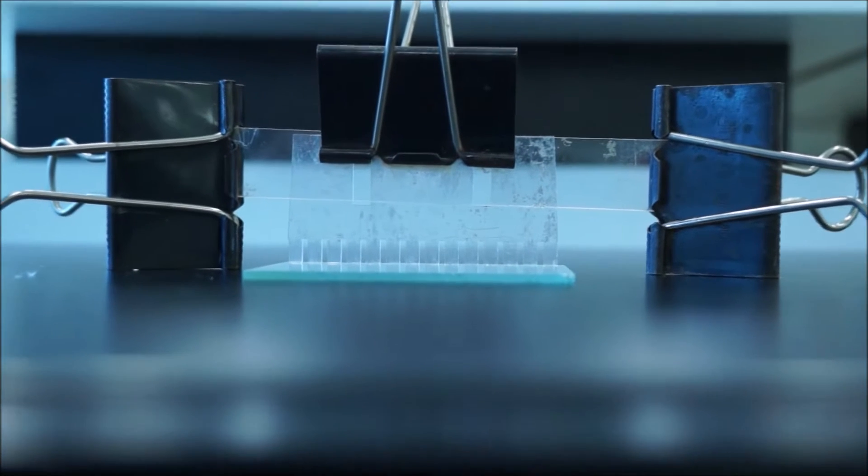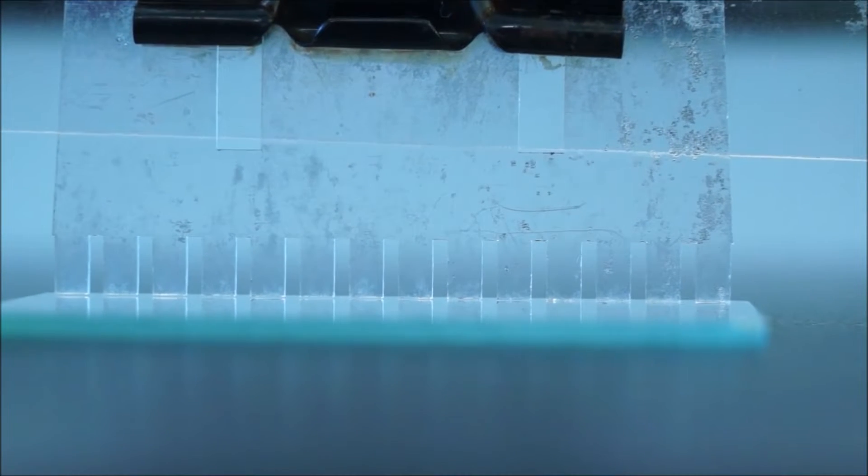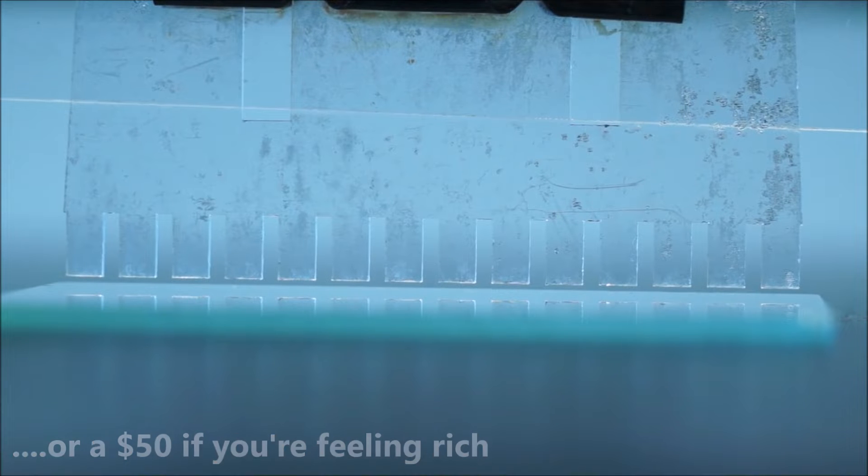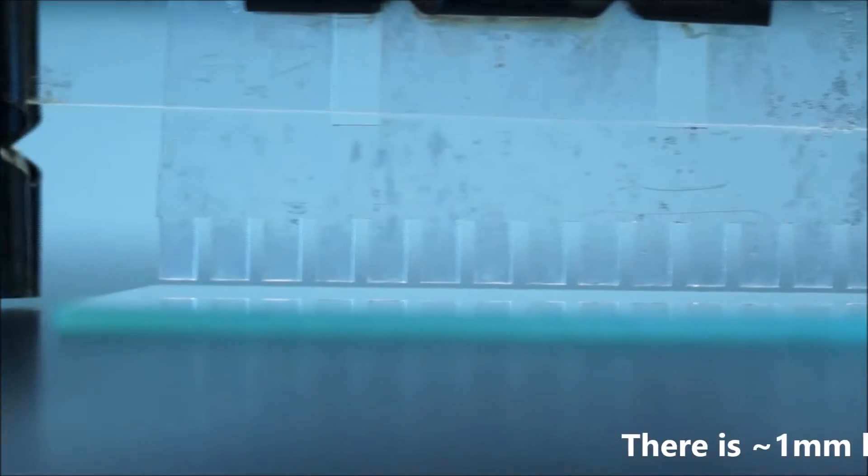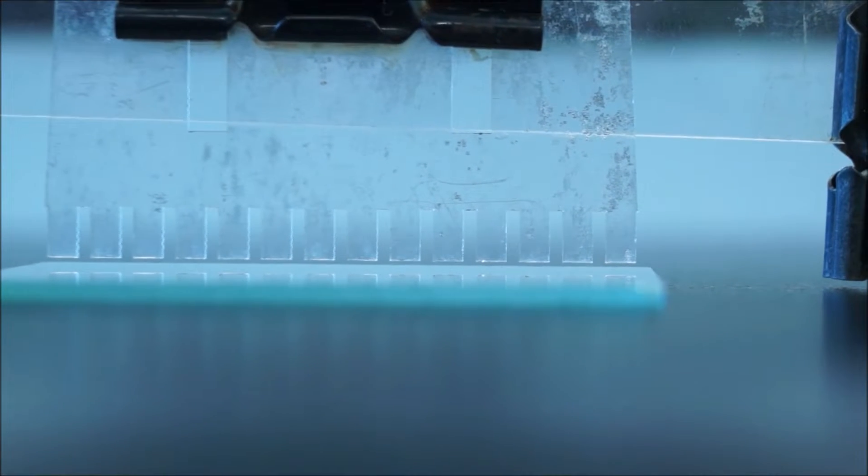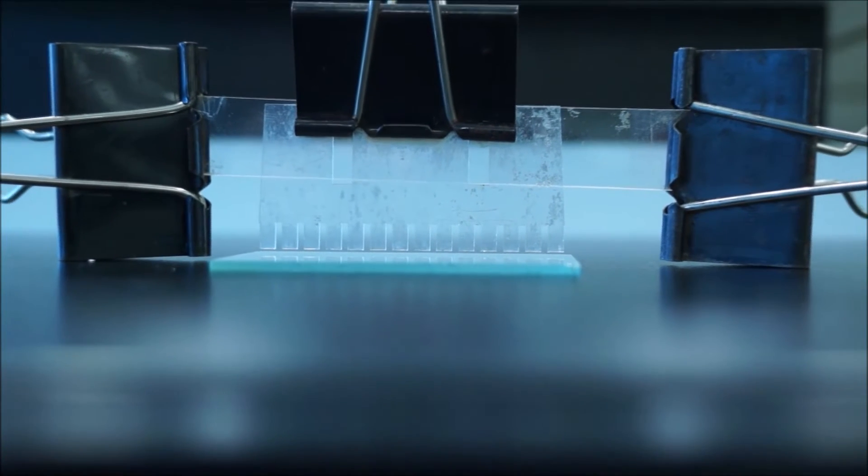What you want to do is get down at the level of the bench and look along the glass slide to make sure the comb isn't quite touching. This one's currently touching, so we need to adjust the bulldog clips so there's enough space that you could slide a $20 note underneath it - perhaps a millimeter or so. Let's see what I've done to the bulldog clips. The bulldog clips are now at a bit of an angle.